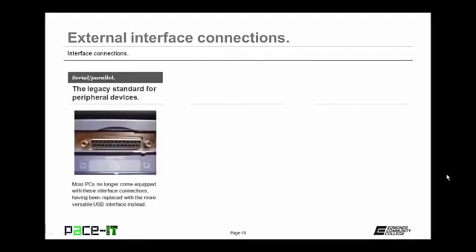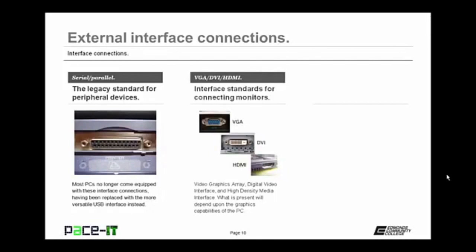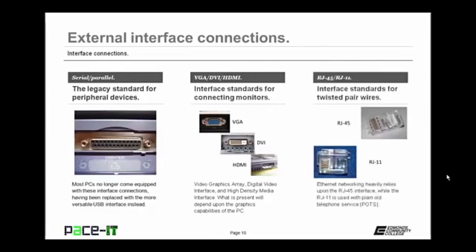Moving on, we have the serial and parallel interface — the legacy standard for external peripheral devices. Most PCs no longer come equipped with these, having been replaced by the more versatile USB. Then there are the standard interfaces for connecting to external monitors: VGA (video graphics array), DVI (digital video interface), and HDMI (high-density media interface). What is present on your PC will depend upon the graphics capability of that PC. Then there are RJ45s and RJ11s — the interface standard for twisted pair wires. Ethernet networking heavily relies upon the RJ45 interface, while the RJ11 is used with plain old telephone service, POTS.